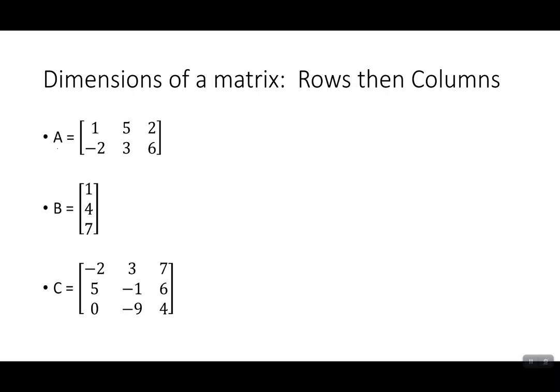For example, the matrix A here has two rows. Rows go across this way, and then three columns. So we would call this a two by three matrix. When we lay out the size of the matrix, we usually write it down here in the lower corner. And it's always rows first and then columns.